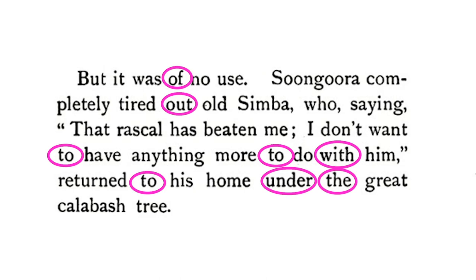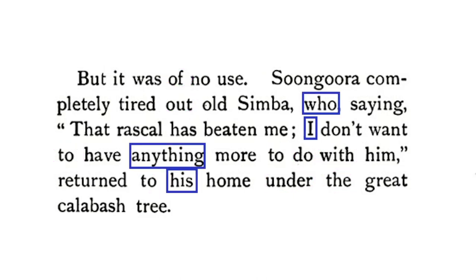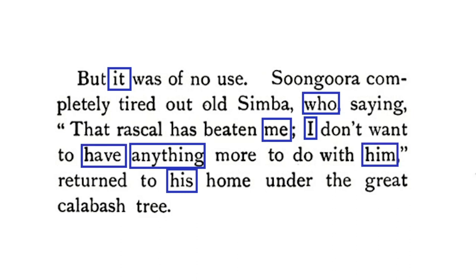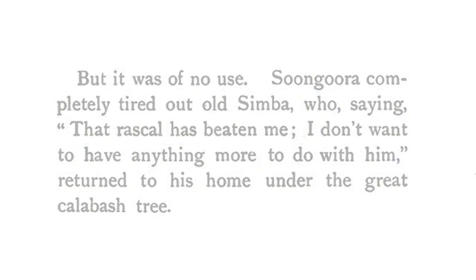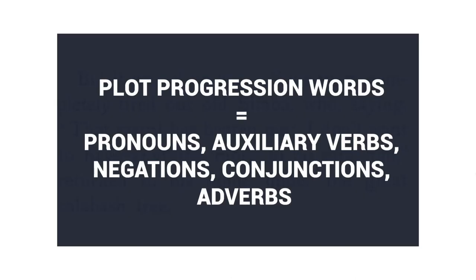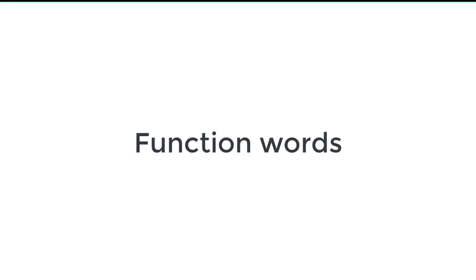Instead, there is a high rate of other short common words like pronouns, such as 'it,' 'me,' 'him,' auxiliary verbs, such as 'was,' 'has,' 'is,' and a mix of other very short words like negations and conjunctions. What this tells us is that different parts of the stories are inhabited by different categories of words, especially the short common connector words, often called function words.